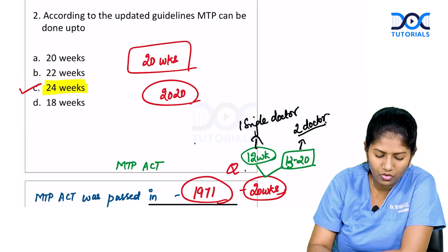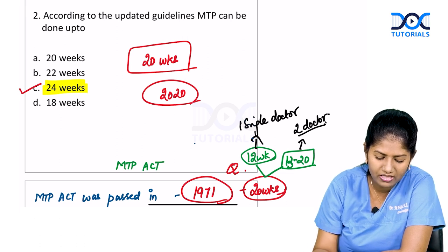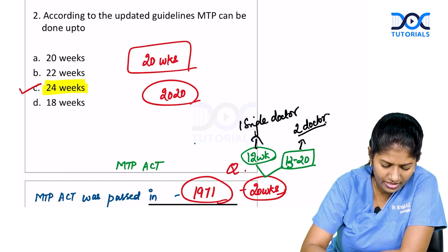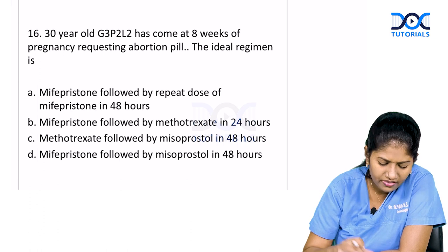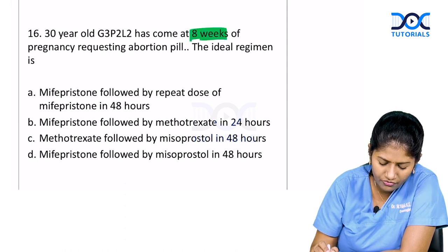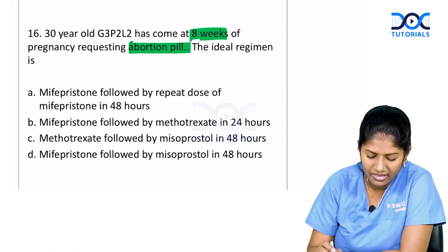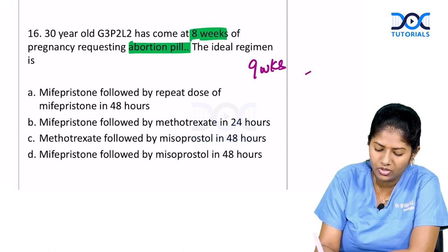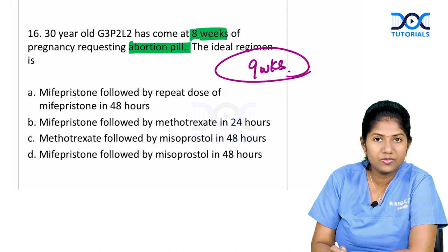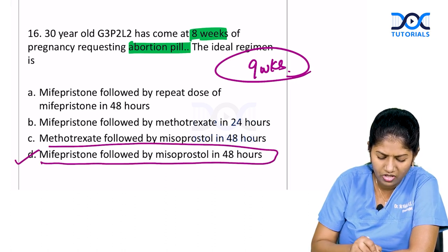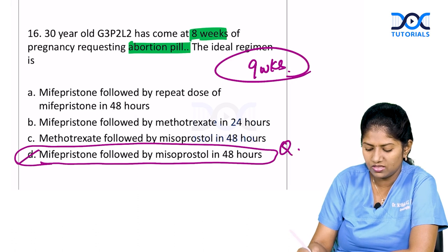Summary of MTP questions from this FMG exam: first, according to updated guidelines MTP can be done up to 24 weeks. Second, a 30-year-old G3P2L2 at 8 weeks requesting abortion pills — medical method can be done up to 9 weeks, so the ideal regimen is mifepristone followed by misoprostol after 48 hours.